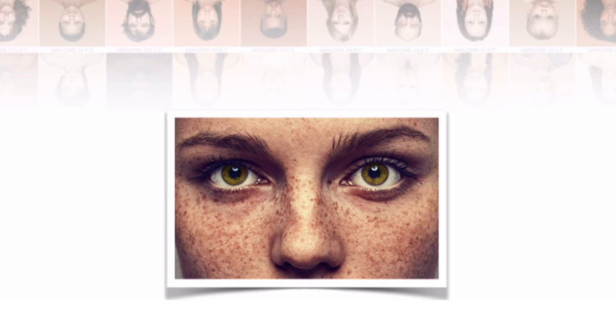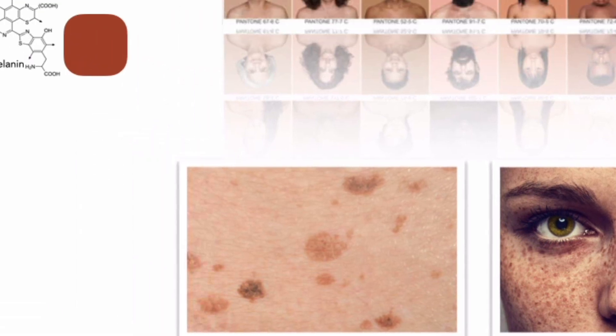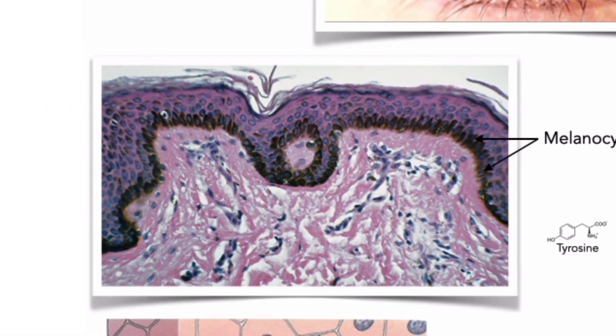Lentigos are similar to freckles but have regular borders and contain abnormal melanocytes. Senile lentigos, or liver spots, are variably pigmented areas that develop on exposed skin in older individuals with pale skin. The ratio of melanocytes to basal keratinocytes ranges between one to four or one in twenty, depending on the region of the body.